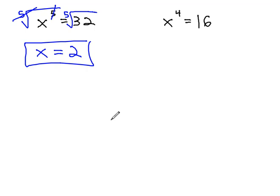This is the odd root property. We can simply take the root that matches the exponent to clear an exponent, because roots and exponents are opposites.